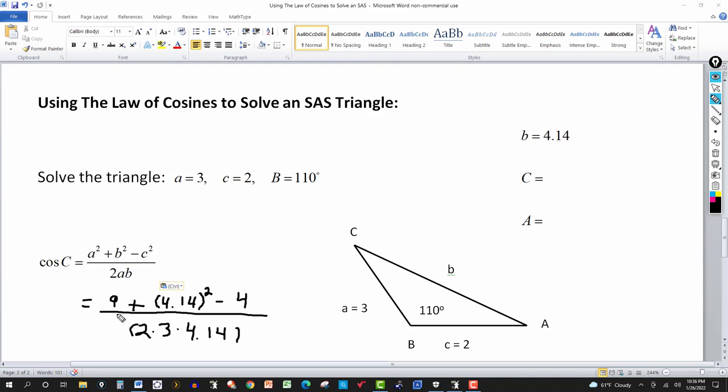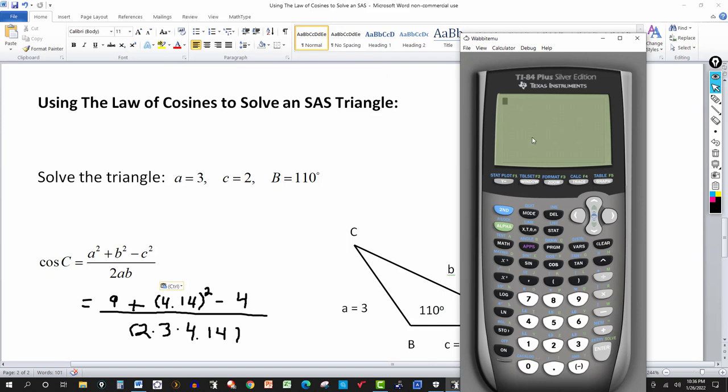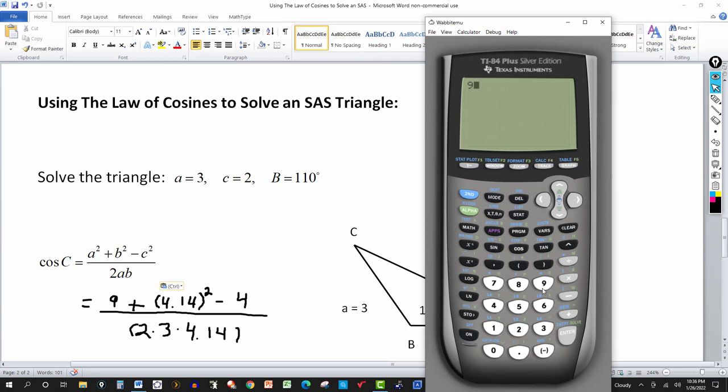So you do these calculations and then cosine C will equal that number. And then you take the inverse. Just to save some time here, let's just enter it in the calculator. So I'm going to have 9 plus 4.14 and that's going to be squared, and then minus 4. And then I just hit enter there. So I calculate the numerator to be that. And then I'm going to divide that answer by 2 times 3 is 6, so 6 times 4.14.